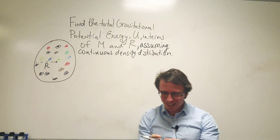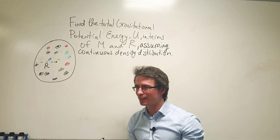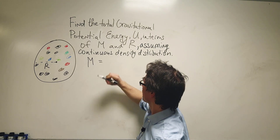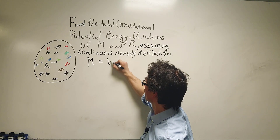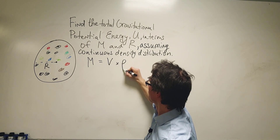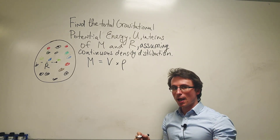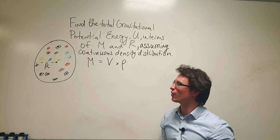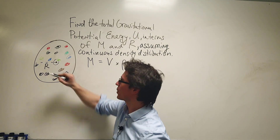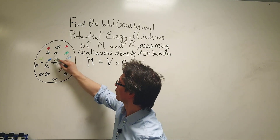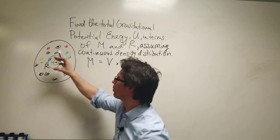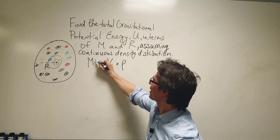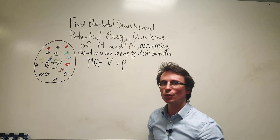In order to answer this question, let's think about mass and density. Density is mass over volume, therefore the mass is going to be equal to the volume multiplied by the density. The mass will no longer just be a constant — it will be a function of R, because if I take a little piece of the sphere, that has a little bit of mass. As R increases, I get more and more mass until I reach a maximum radius R.